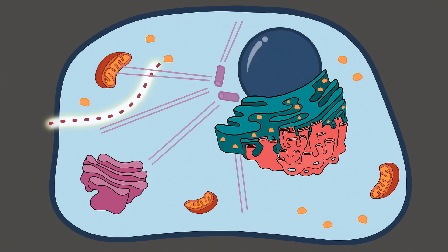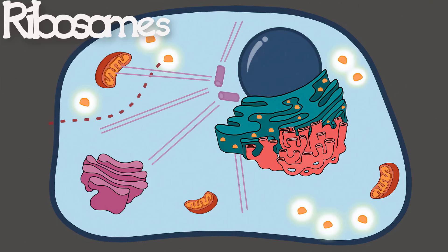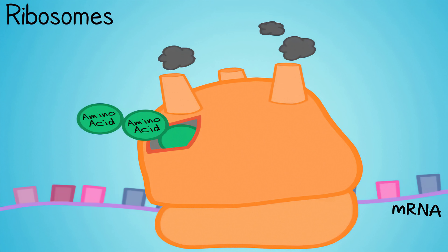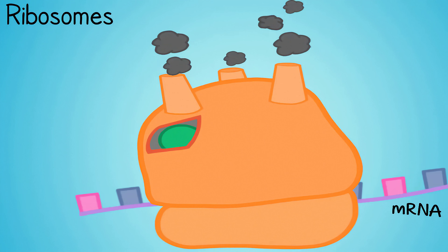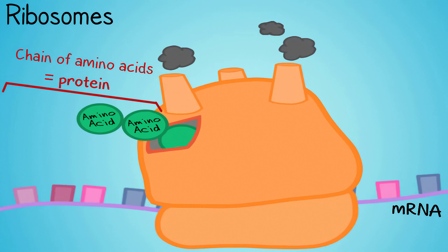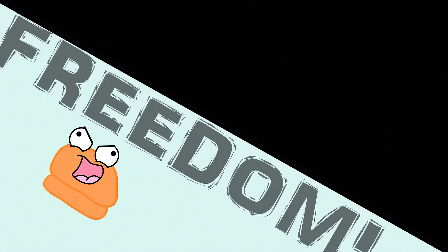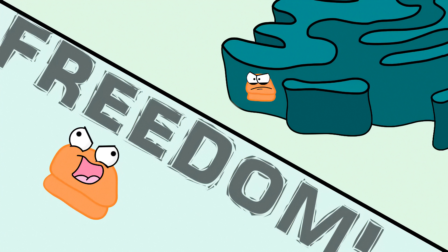Moving through the cytoplasm, let's start with ribosomes. They are not membrane-bound organelles and are going to be in both prokaryotes and eukaryotes. They make protein, which is really important because that's what so much of genetic material codes for — protein. Ribosomes can be free in the cytoplasm, but they can also be attached to another organelle, which we'll talk about a little bit later.